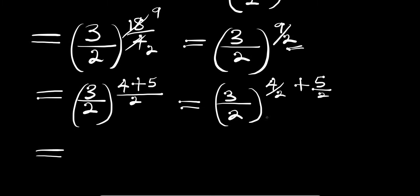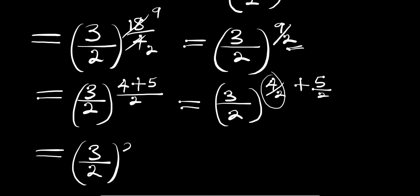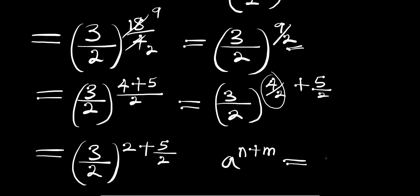Now, 4 divided by 2 is simply 2, so we have (3 divided by 2) to the power of 2 plus 5 divided by 2. Let's consider this identity: if you have a to the power of n plus m, this equals a to the power of n times a to the power of m.